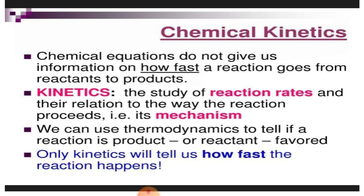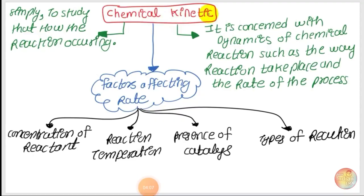We can use thermodynamics to tell if a reaction is product-favored or reactant-favored, but only kinetics will tell us how fast the reaction happens - whether the reaction is fast, slow, or moderate. Chemical kinetics is simply the study of how a reaction occurs, whether it has been occurring fast, slow, or moderate. It is concerned with the dynamics of chemical reaction, such as the way reactions take place, the rate of the process, the number of steps in the mechanism, and the speed of the reaction.